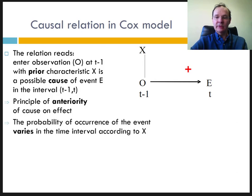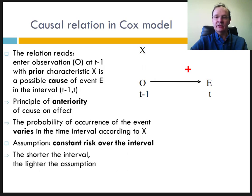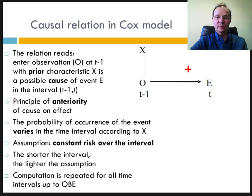The probability of occurrence of the event varies depending on whether the individual has characteristic x or not. It is assumed that the observation time interval is small enough that the risk is constant during the interval. Here again, the smaller the interval, the weaker this assumption. The calculation is repeated as many times as there are time intervals until the end of observation.